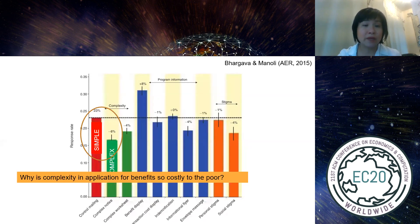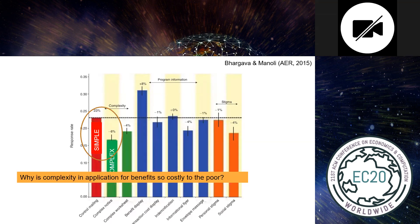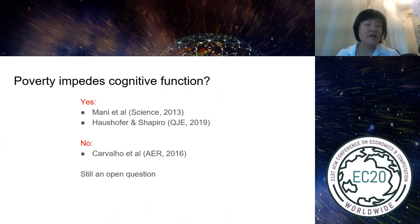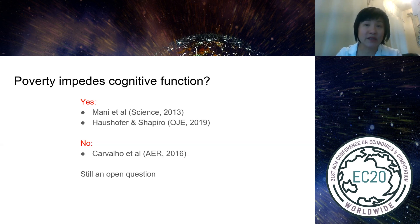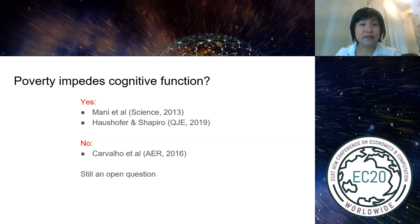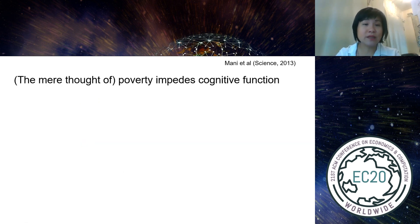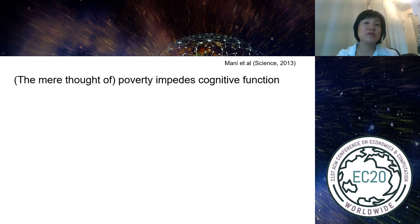So why is complexity so costly for the poor? One possibility is that poverty impedes cognitive function. This is still an open question — some papers say yes, others say no. In one key paper, it's not just poverty itself but the mere thought of poverty: the stress that comes from thinking about what it's like to be poor impedes cognitive function.